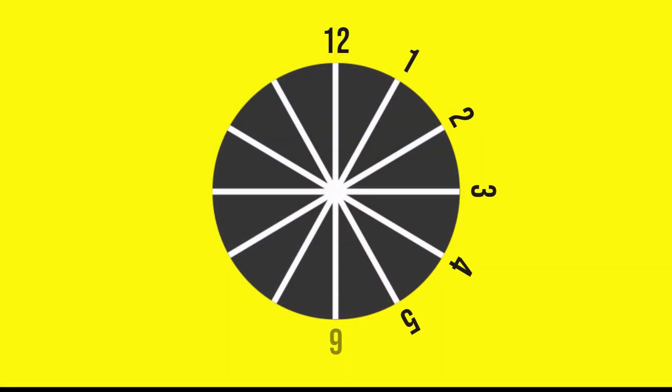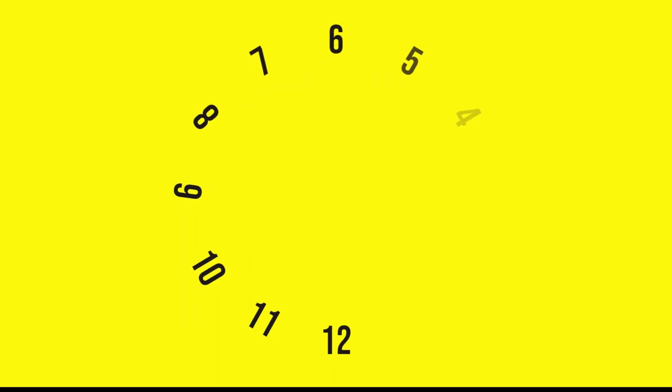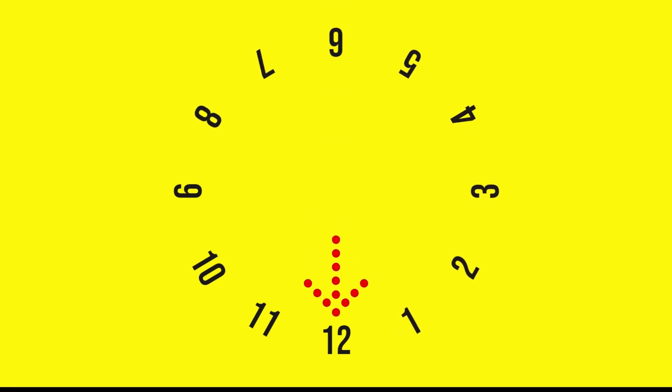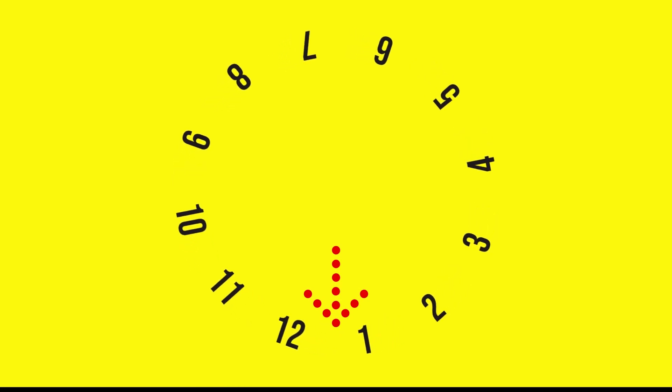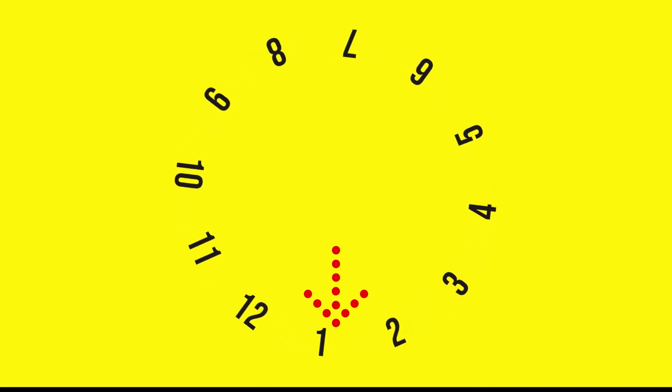Normally we make our dial start with 12 on top, but since we want a dial that starts on south, all we have to do is write the number 12 on south, then apply the 30-degree rule. Once the wheel rotates, you will see the clock starts at south.